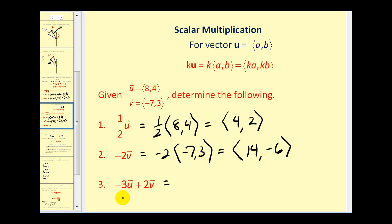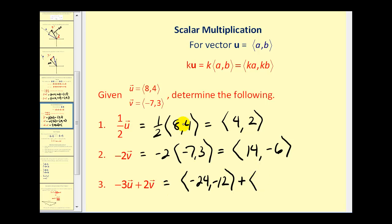If we wanted to find the sum of negative 3 times vector U and 2 times vector V, we first multiply vector U by negative 3 to get ⟨negative 24, negative 12⟩. Then 2 times vector V gives us ⟨negative 4, 6⟩. So the resultant would be ⟨negative 28, negative 6⟩.